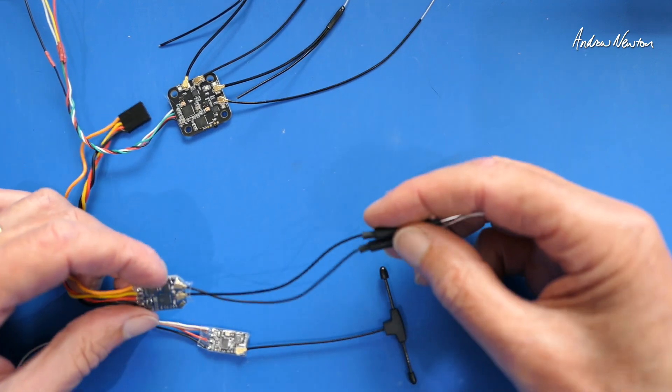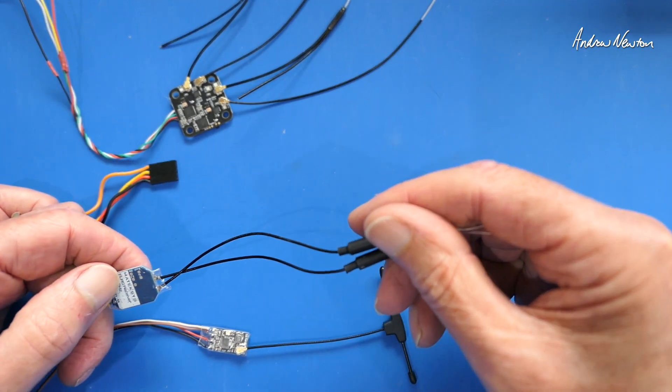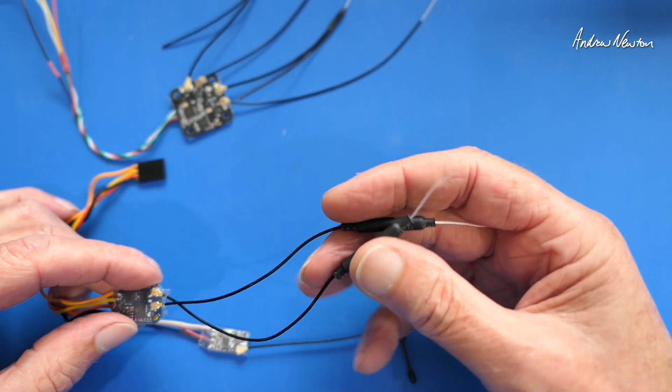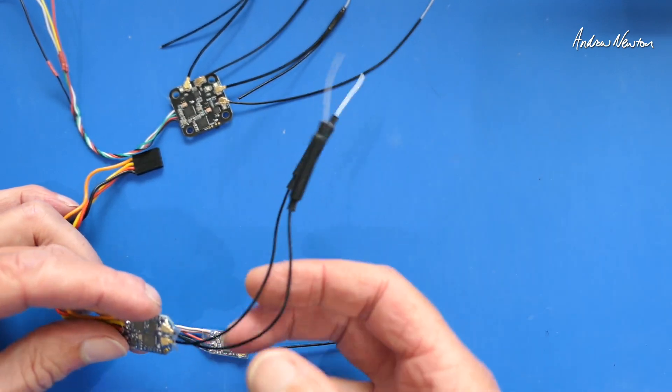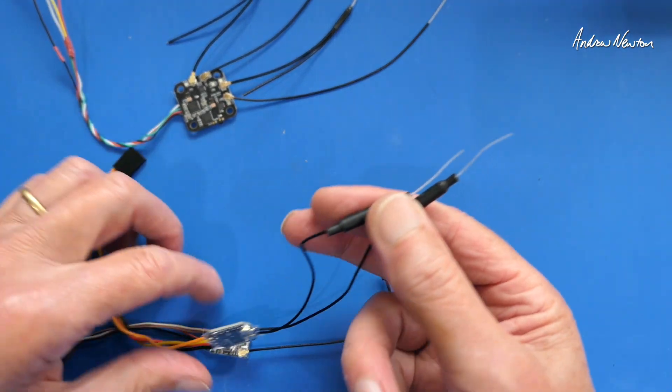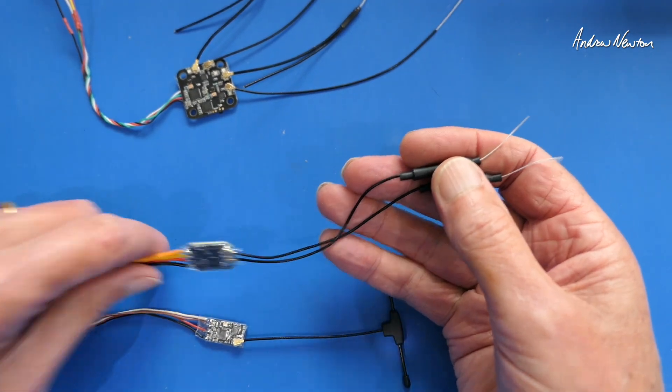And then you go to the dual antennas like this Matec. That is the R24D. That has Gemini mode. It's sort of two receivers in one. But you do have to be able to locate those two antennas on your plane somehow, which is a little bit tricky sometimes.